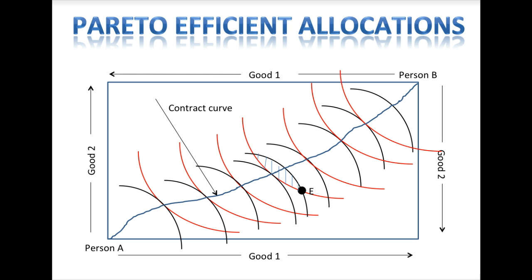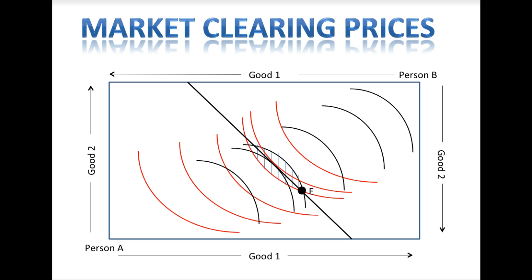To find the prices that will clear the market, we want to find the prices that are equal to Person A's and Person B's marginal rates of substitution. This will be the slope of a line that connects two points: the endowment point and a tangency point between the two sets of indifference curves. The point where the tangency point and budget line meet will establish the equilibrium allocation of goods 1 and 2.